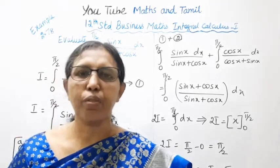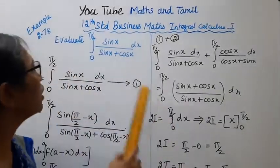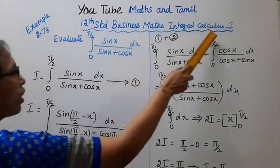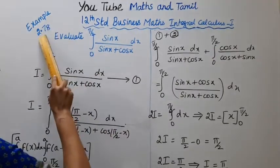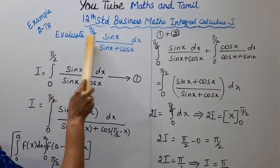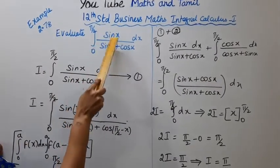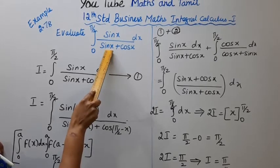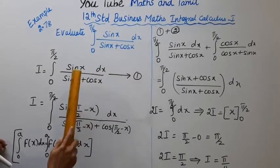Hello students, welcome to Max and Tamil channel. 12th standard business maths, integral calculus 1, example 2.78 — evaluate: integration 0 to π/2 of sin x divided by (sin x plus cos x) dx.